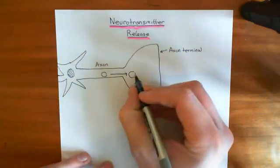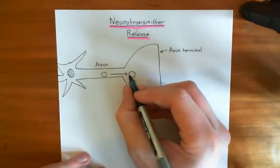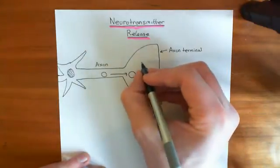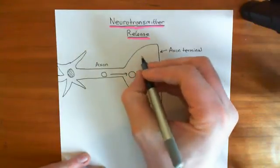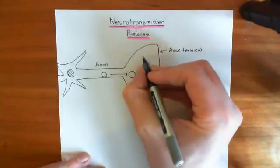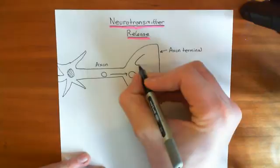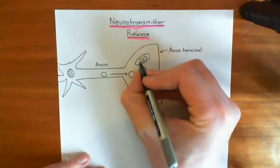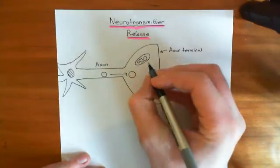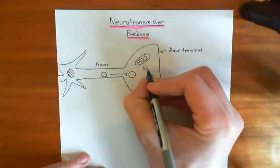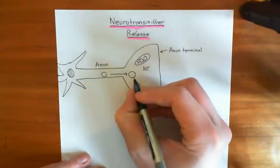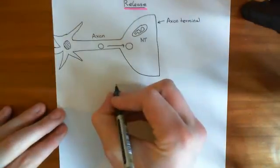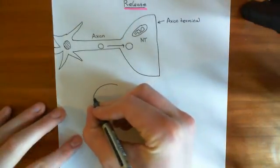The neurotransmitter is going to be manufactured in the axon terminal. For this, you require energy generally, so there are a lot of mitochondria in the axon terminal. You synthesize the neurotransmitter — let's denote it here as NT — in the axon terminal, and we now want to get it into the vesicle. How does this occur? It occurs by a process of secondary active transport.